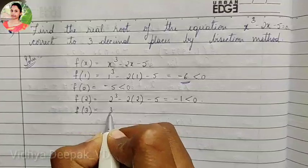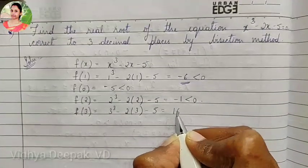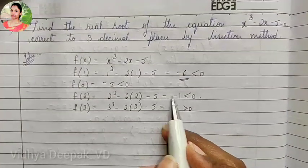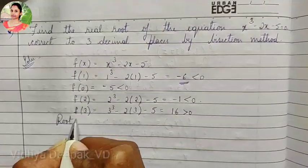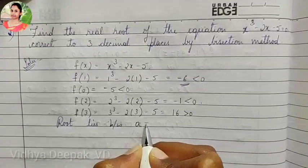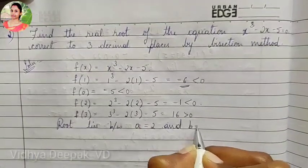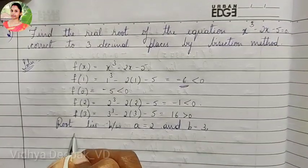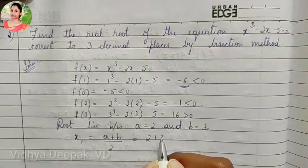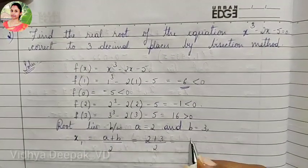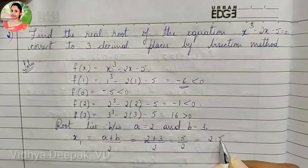So f of 3 is 3 cube minus 2 into 3 minus 5, giving 16, which is greater than 0. That means the root lies between a and b. We take a equal to 2 (where f is negative) and b equal to 3. Our formula is x1 equals a plus b divided by 2, so x1 equals 2 plus 3 divided by 2, which is 5 by 2, giving x1 equal to 2.5.